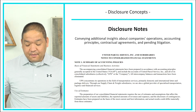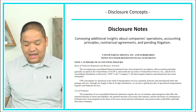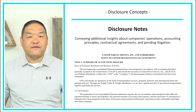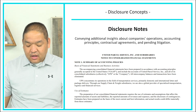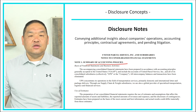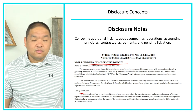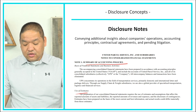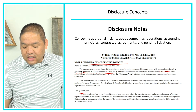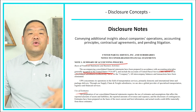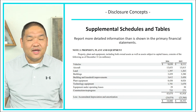The second type is the disclosure note, which conveys additional insight about a company's operations, accounting principles, contractual agreements, and pending litigation. Note one — standard for any public company financial statement — is the summary of accounting policies. This tells users what accounting policies were used to prepare the financial statement: for instance, that estimates are used (such as for depreciation) and that US GAAP was followed.